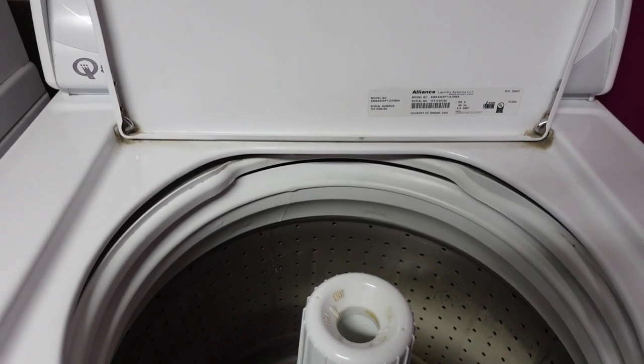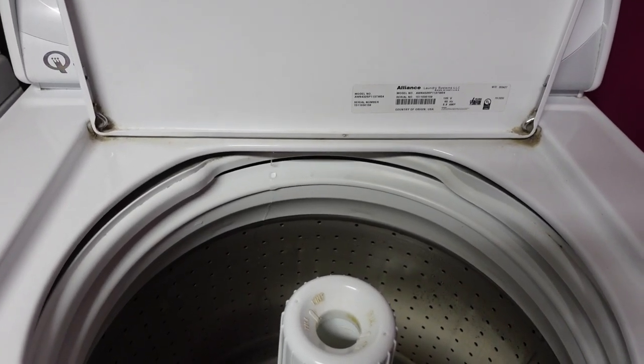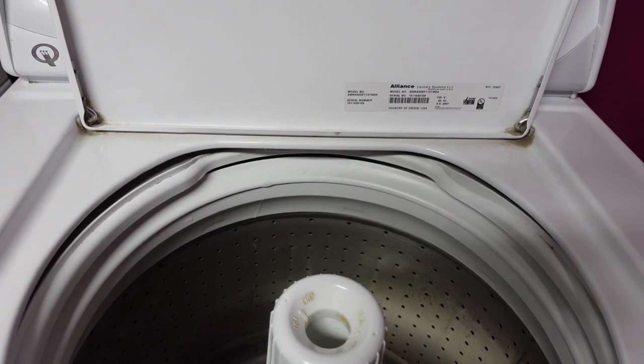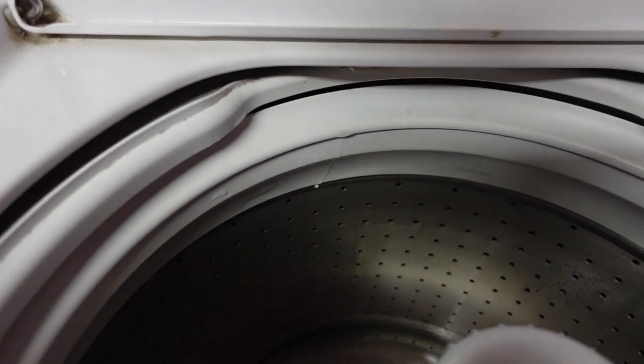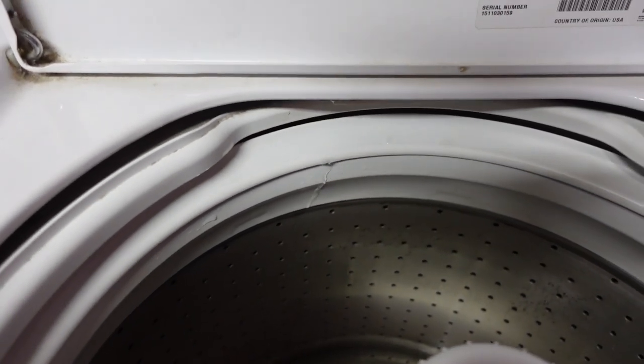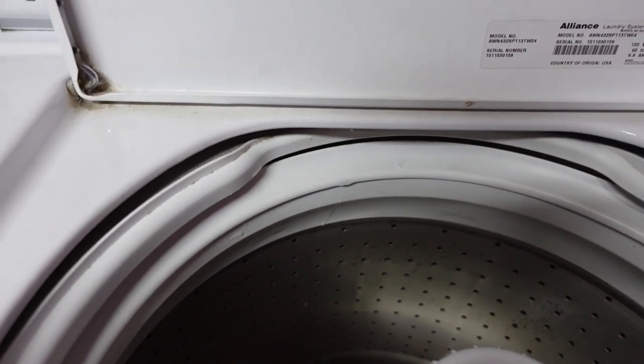All right, so what we have here is a Speed Queen model AWN 432 SP113 TW04, and as you can see right there it's dripping. It's leaking a little bit, so what that is is the flow valve control valve.